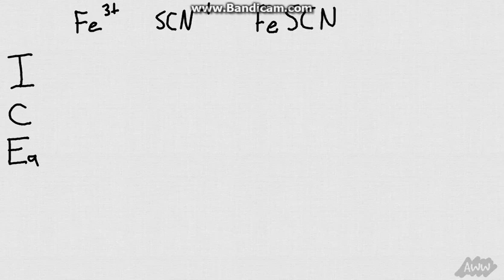We make one column for each one of our molecules, so we have Fe ion, we have our SCN ion, and we have our FeSCN.